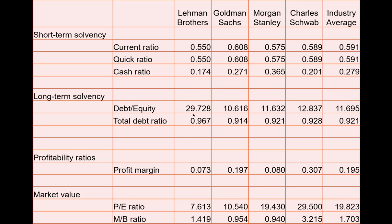Firm A is actually Lehman Brothers — these are the last data points right before it defaulted on its debt. Notice here a debt-to-equity ratio of 29, and depending on how you calculate it, it went as high as 36 dollars of debt for every dollar of equity. Quite frankly, this is enormous. If I saw this for any firm, that's a major red flag.